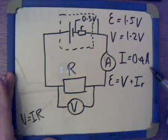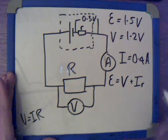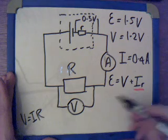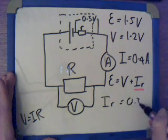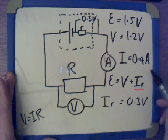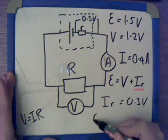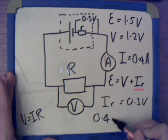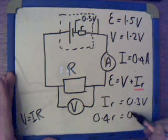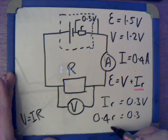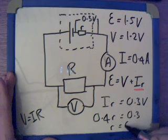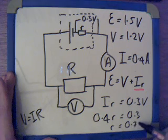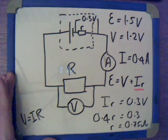So, with this information now, and the fact that these are our lost volts here, we know that the lost volts, IR equals 0.3 volts. If current is 0.4, therefore, 0.4 times R equals 0.3. Therefore, the internal resistance is equal to 0.75 ohms.